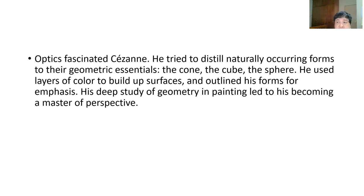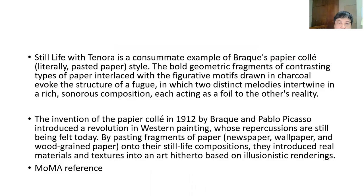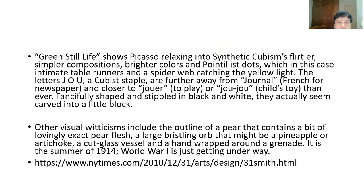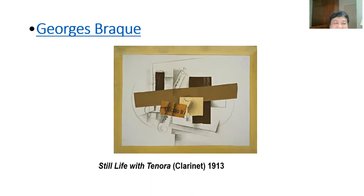Cézanne was still in the Impressionist period, but this led to ideas by Braque—Still Life with Tenora—a departure from the previous approach. In 1908, George Braque broke things down and showed an object from a different perspective on a flat surface—a volumetric circular element. They usually used a musical instrument like a clarinet as the subject, another form of still life.